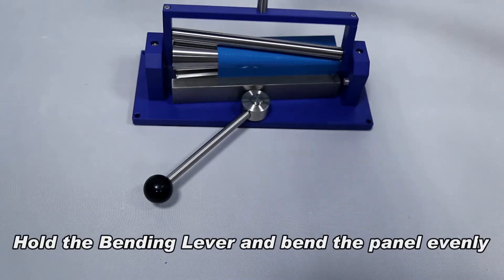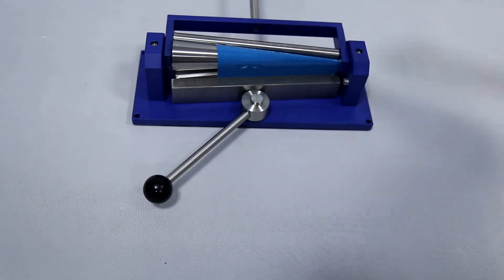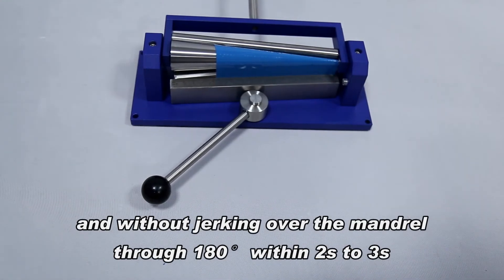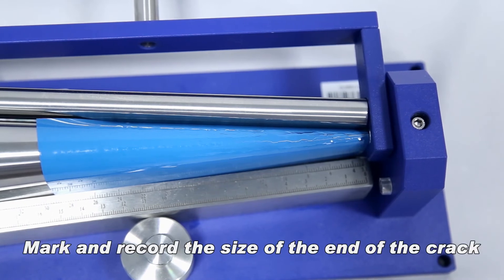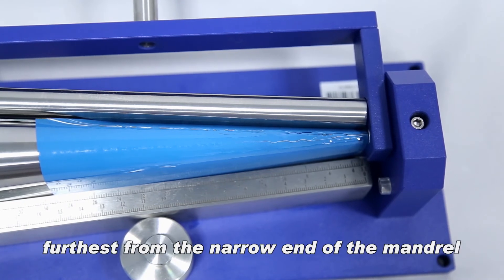Hold the bending lever and bend the panel evenly and without jerking over the mandrel through 180 degrees within two to three seconds. Mark and record the size of the end of the crack furthest from the narrow end of the mandrel.